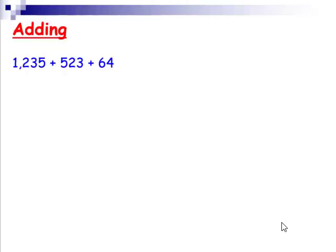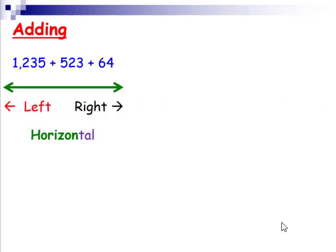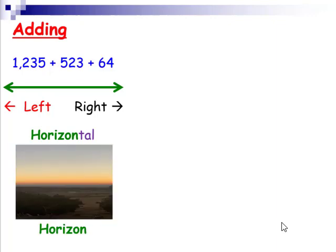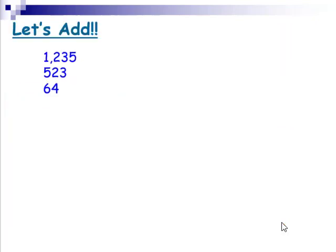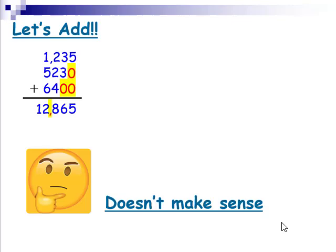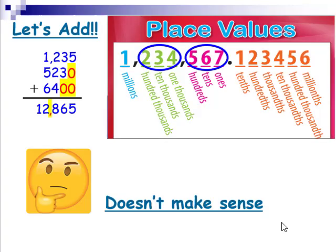When adding, numbers can be written horizontally, like you see, from left to right, and remember, we can always remember horizontal is left to right because of the horizon, or they can be written vertically, up and down. Let's add. We lined up the numbers like so, and we just added zeros to them. 5 plus 0 plus 0 is 5, 3 plus 3 plus 0 is 6, 2 plus 2 plus 4 is 8, and 1 plus 5 plus 6 is 12. This is giving us a total of 12,865. This doesn't make any sense. Why? Because of place values.